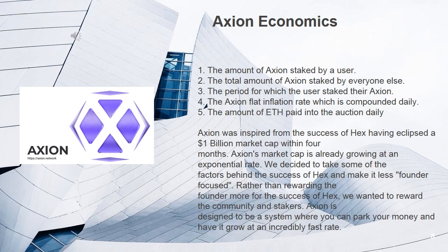Axion Economics. Axion generates interest through the idea of inflation. The Axion smart contract doesn't just pay out Axion from its reserves to reward stakers randomly, but on 5 basic principles: 1. The amount of Axion staked by a user. 2. The total amount of Axion staked by everyone else. 3. The period for which the user staked their Axion. 4. The Axion flat inflation rate, which is compounded daily. 5. The amount of ETH paid into the auction daily.